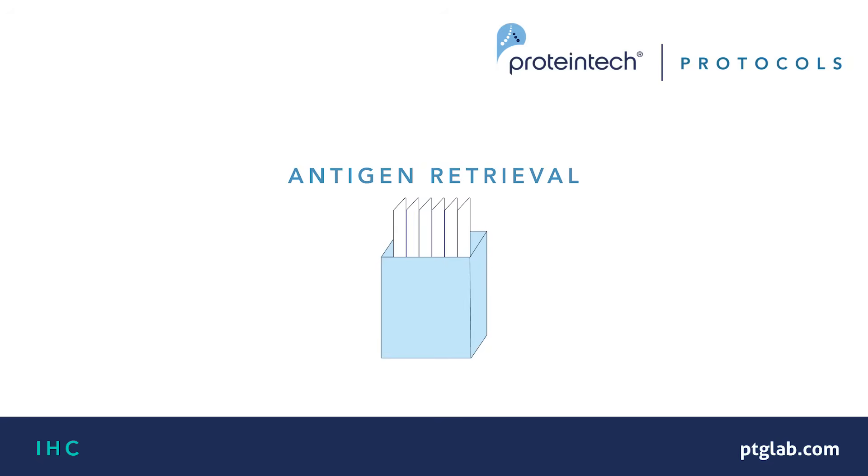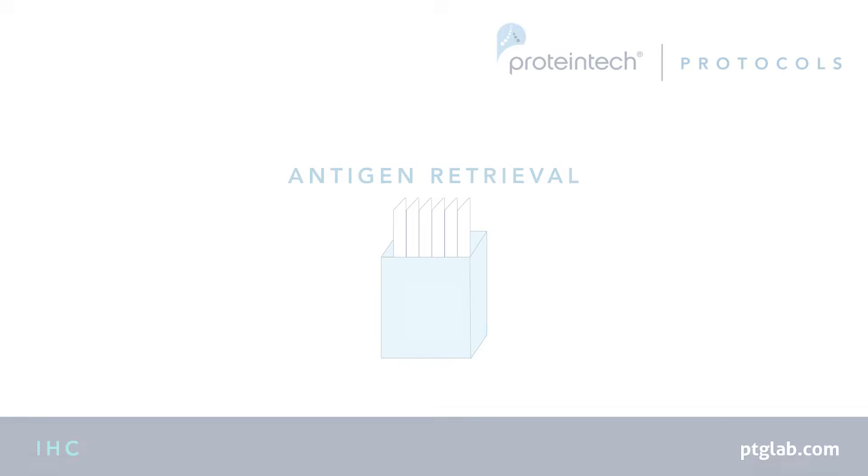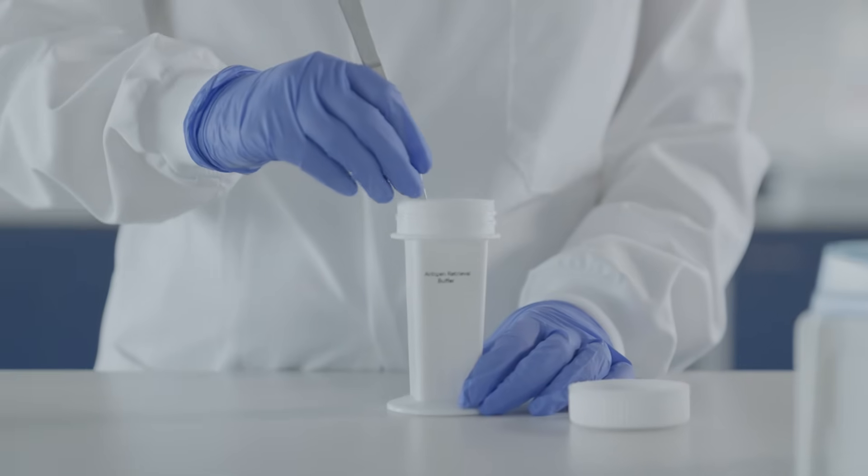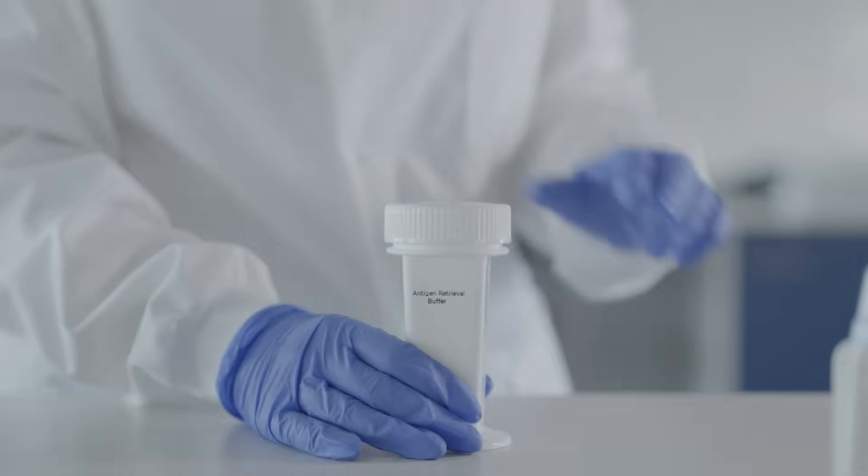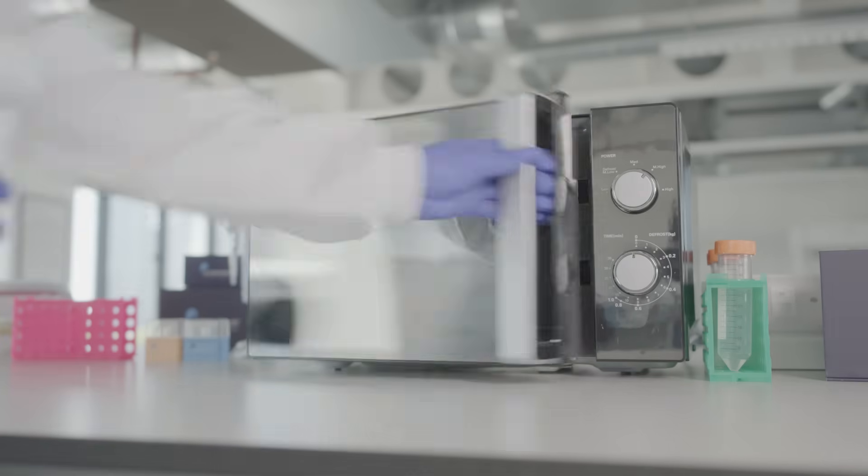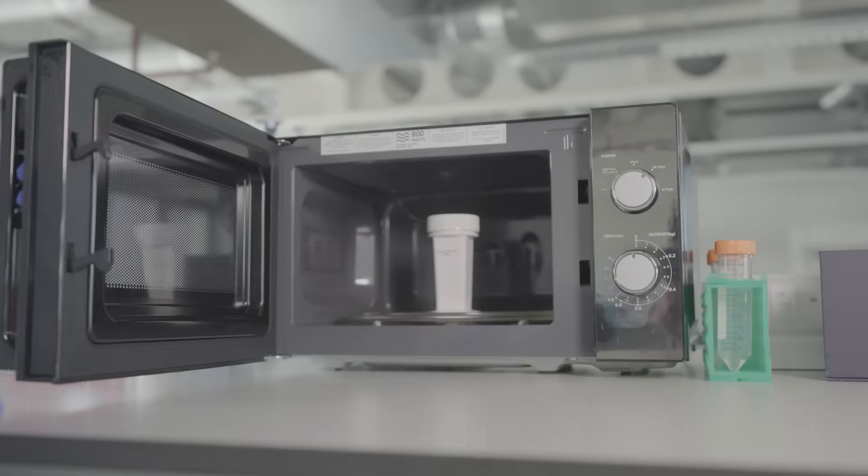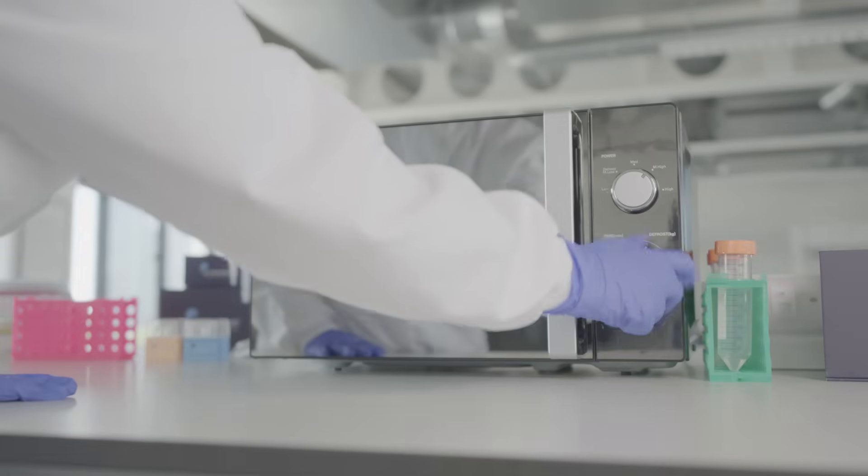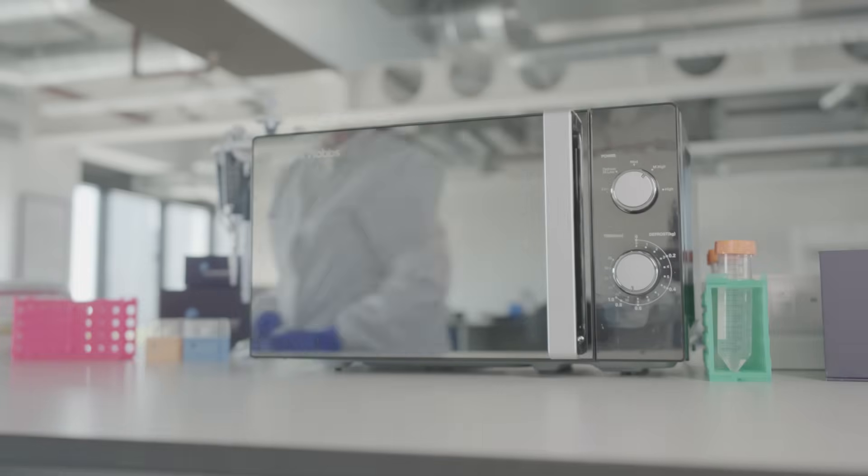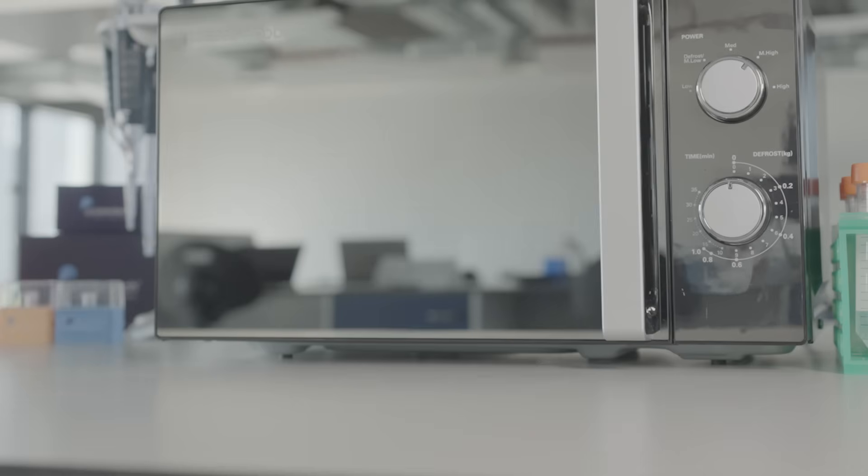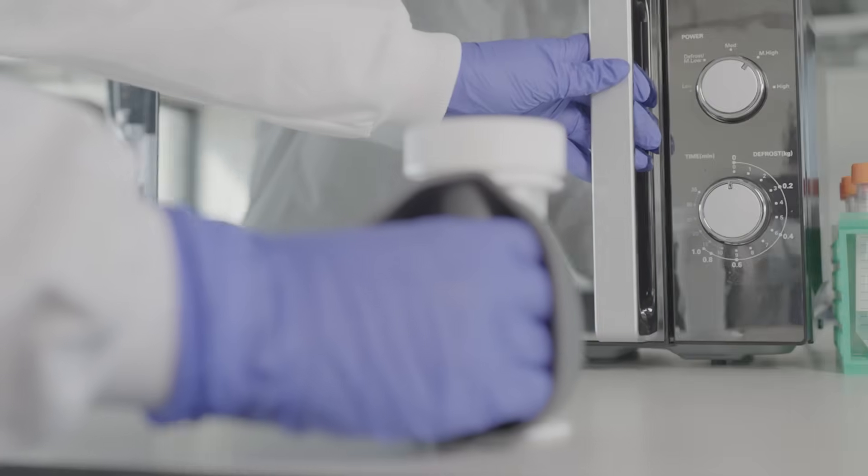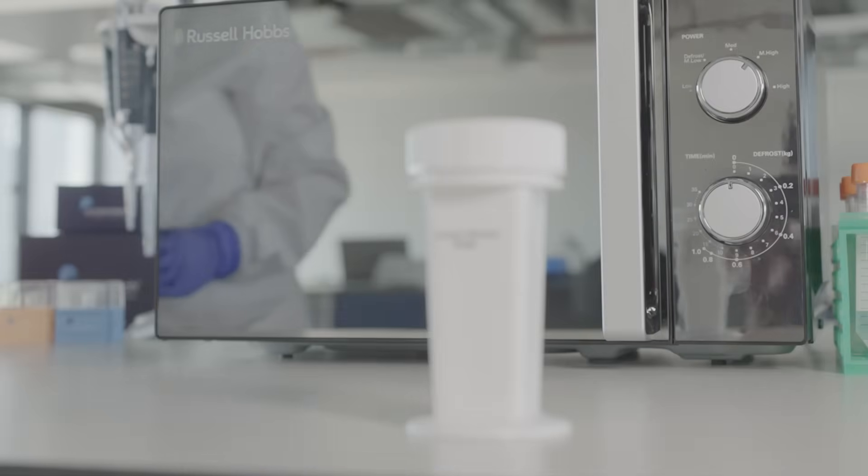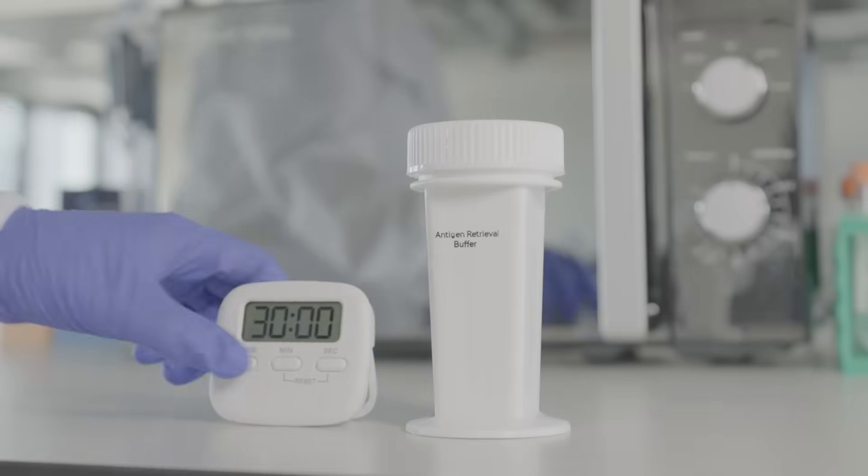Antigen retrieval is not always necessary for your antibody. All Proteintech antibodies validated for IHC have recommended antigen unmasking protocols, which can be found on the product datasheet. To perform antigen retrieval, transfer slides to a microwave-proof container and cover with the recommended antigen retrieval buffer. Heat the samples in the microwave on medium power for 10 minutes. You should maintain the temperature at just below boiling point without overheating. Allow slides to cool in the antigen retrieval buffer for approximately 30 minutes at room temperature.